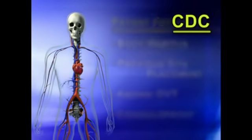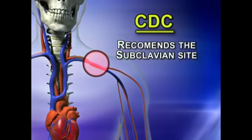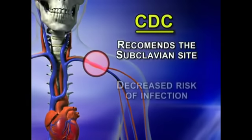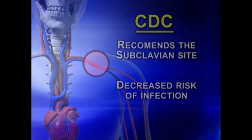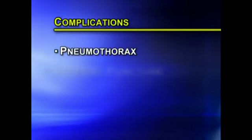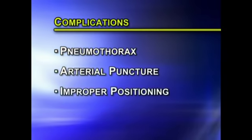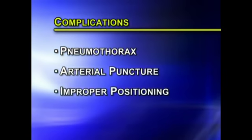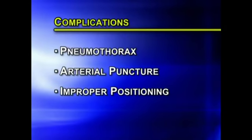The CDC recommends the subclavian site for insertion because of its decreased risk for infection. Complications include pneumothorax, arterial puncture, and improper positioning. We will describe the technique for subclavian central venous catheter placement.